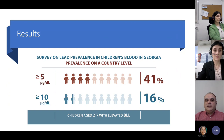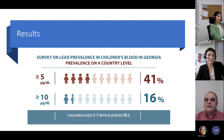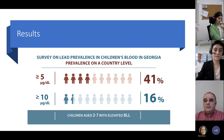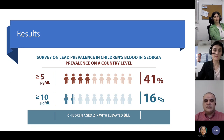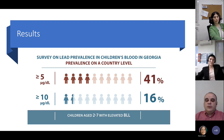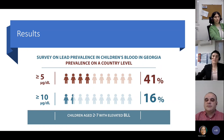For the first time in MICS history, UNICEF Georgia — together with the MICS global and regional team, the National Statistics Office of Georgia, and NCDC — designed and integrated a nationally representative children's lead testing module in MICS. The main results: 41% of children aged 2 to 7 years had elevated blood lead levels above 5 micrograms per deciliter, while 60% of children had blood lead levels above 10 micrograms per deciliter.